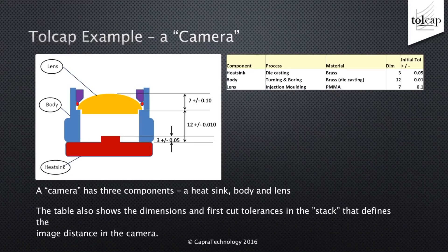Here's the example. It's a camera of some sort and it has three components: a heatsink, a body, and a lens. The table also shows the dimensions and first-cut tolerances in the stack that defines the image distance in the camera.